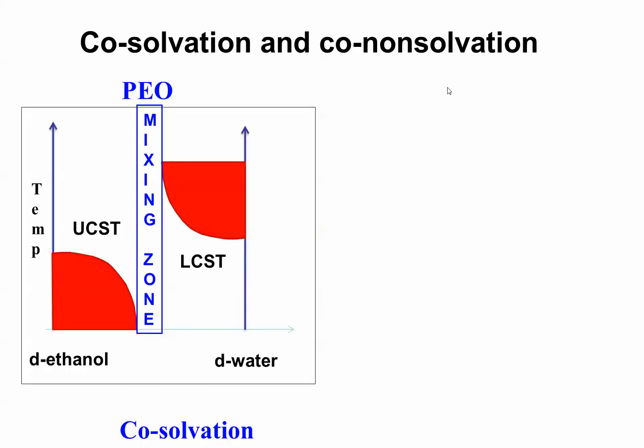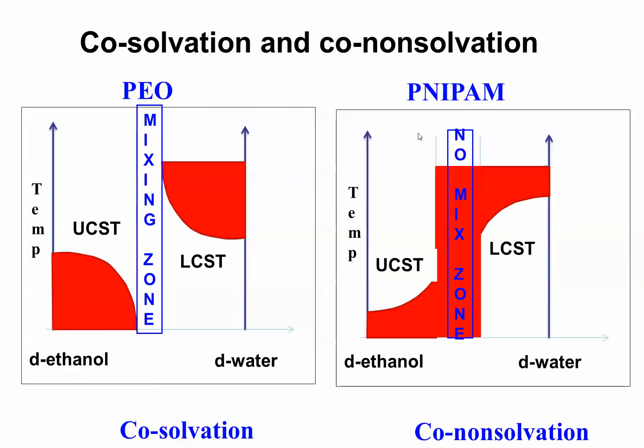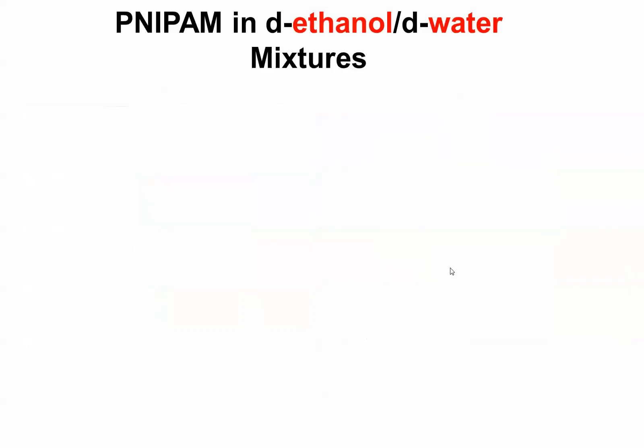Let's talk about co-non-solvation. Co-solvation, most water-soluble polymers behave that way, but there is one notable exception. The notable exception is called NIPAM. It's a polymer that does the opposite. When you're in pure ethanol it's UCST. In pure water is LCST. But in between, you don't get a perfectly mixed region, but completely phase separated region.